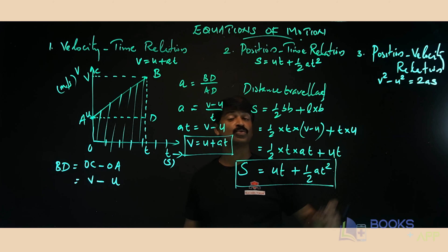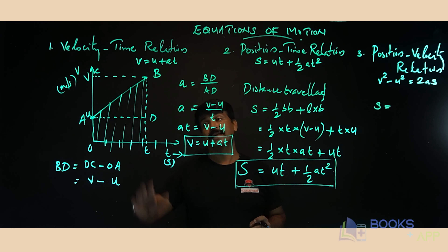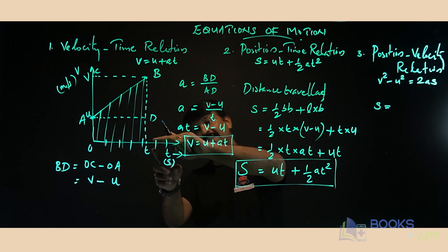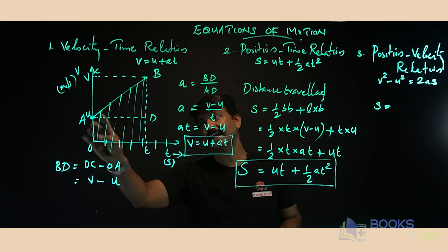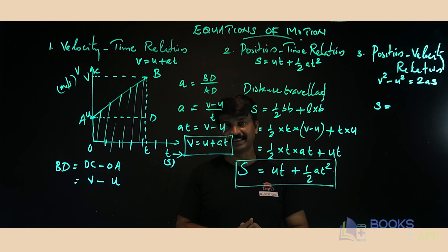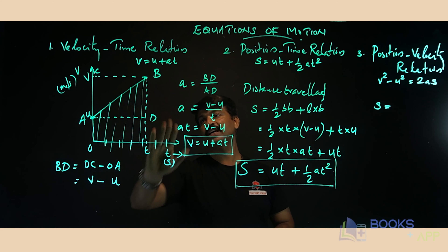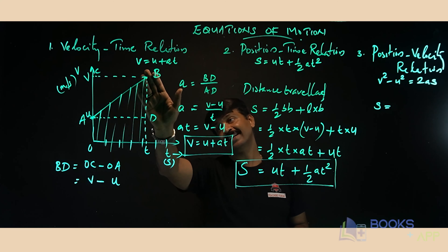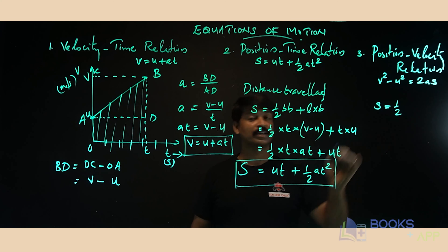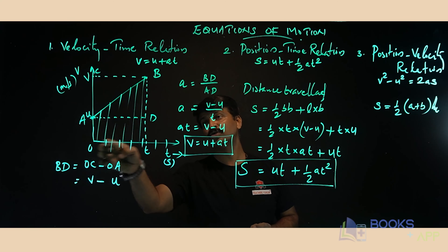Now let us derive the third equation of motion — the position-velocity relation v² - u² = 2as — from the same graph. The distance traveled by the object is the area under the graph, and this region can be considered as a trapezium, since two of its sides are parallel. The area of this trapezium gives the distance traveled.